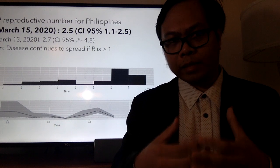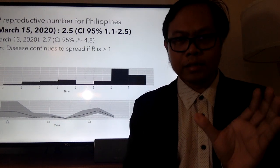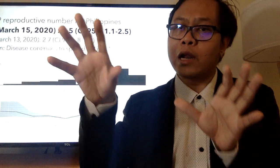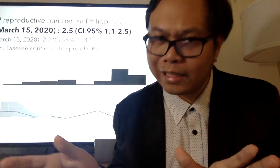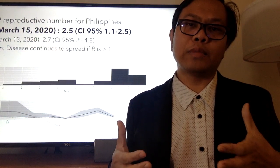Yung COVID-19, pag sinabing ang reproductive number niya ay 2.5, yung isang case, makakahawa siya ng humigit kumulang 2.5. Dalawa at kalahating yung pwede niya mahawahan. Ganun kinocompute yung reproductive number.